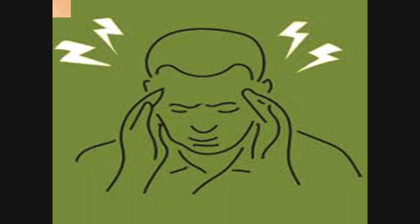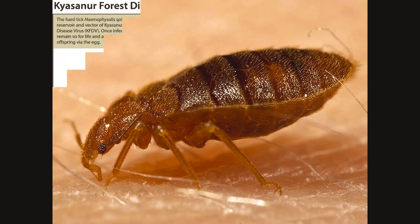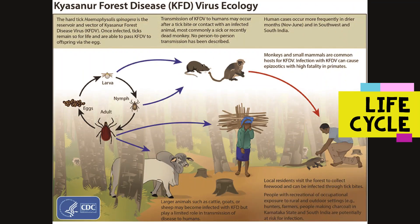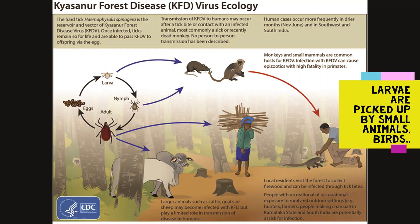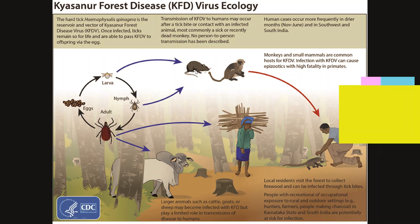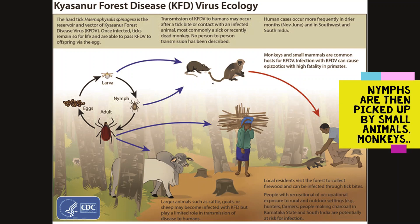It is through a forest tick called Haemophysalis spinigera. To make the picture more clear, we have to see the life cycle of this dangerous tick. The eggs hatch into thousands of larvae, which are picked up by small animals and birds. The fed larvae drop to the ground, molt to nymphs, and seek hosts again — small animals and monkeys.